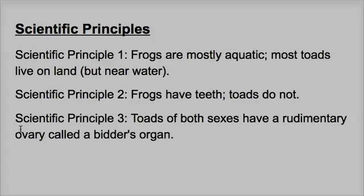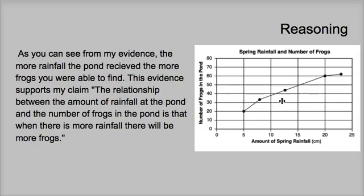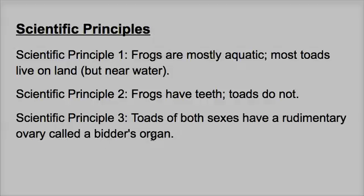When you get scientific principles, go through them, look at the data and evidence you have, and see which one is actually applicable. Looking at this graph about number of frogs in the pond and amount of rainfall, let's start with number three — toads of both sexes have a rudimentary ovary. This has nothing to do with that, so cross out or strikethrough scientific principle number three.